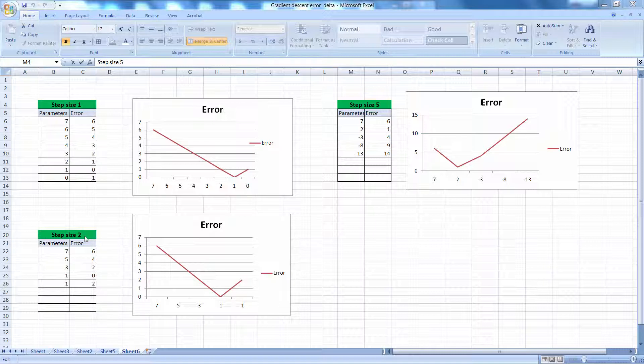If the step size is 2, you change from 7 to 5 and then all the way down to -1. In this case, the error also touches the minimum, which is 0. But if you increase from 2 to 5, the parameter changes from 7 to 2 and so on. But in this case, the error actually does not reach a minimum of 0. It goes all the way to 1 and then starts to go in the other direction. That's why the step size should be considered carefully.